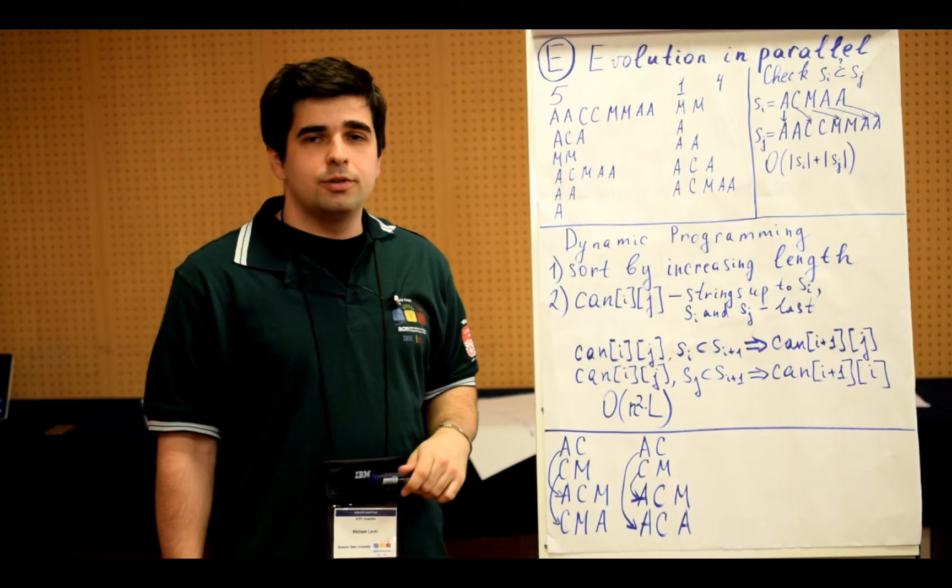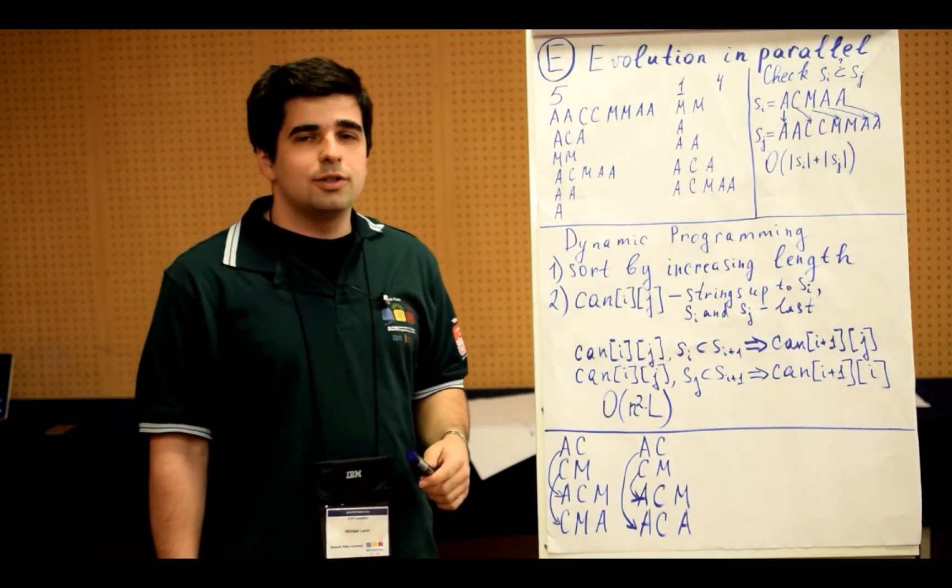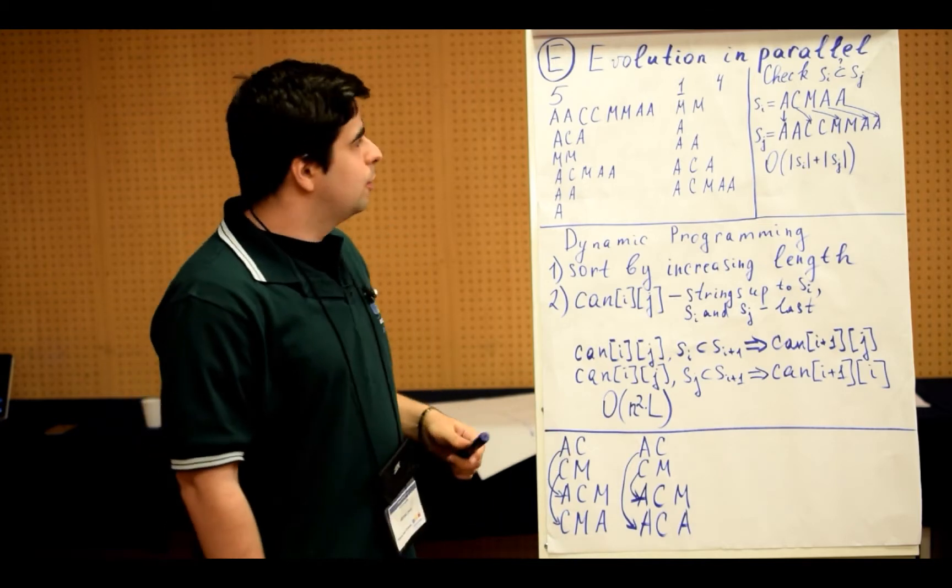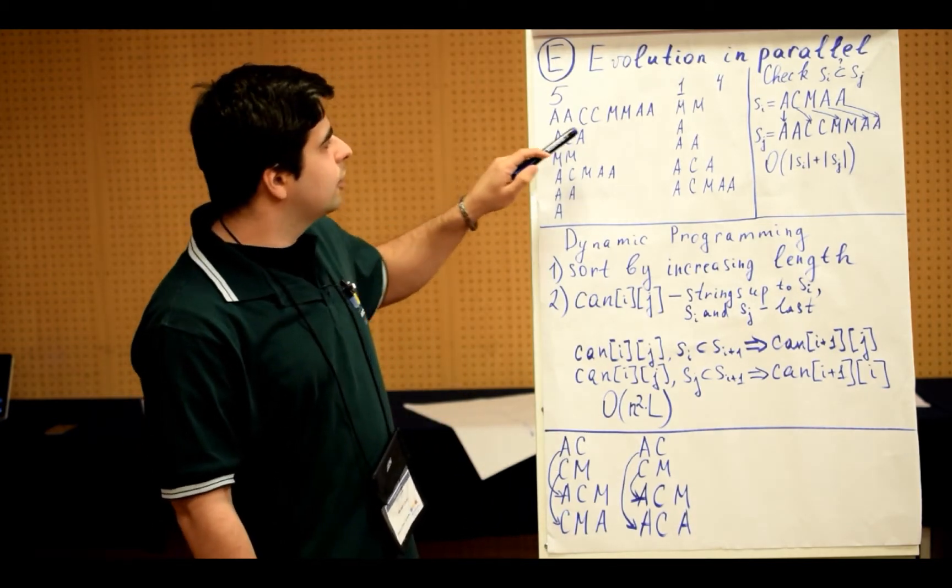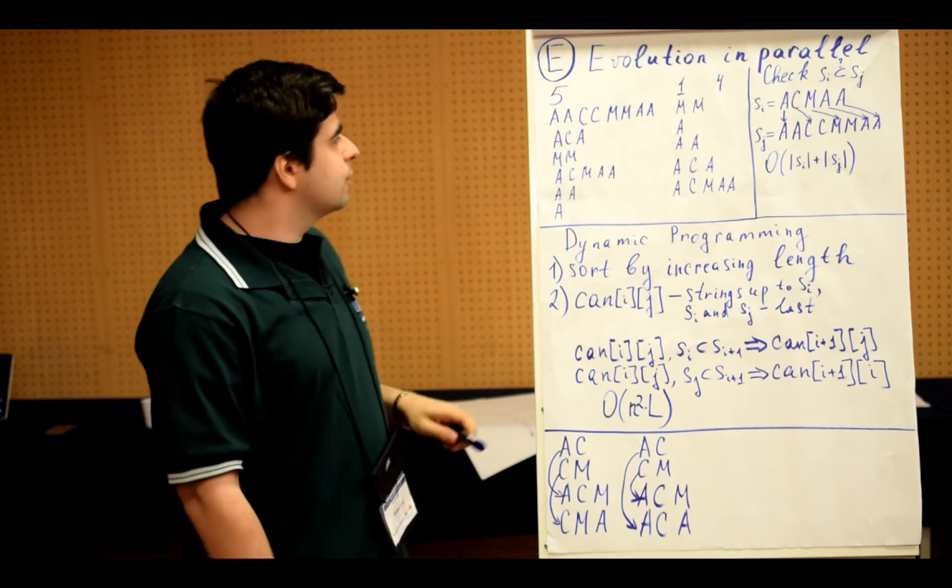This is a problem about the distant future. Our scientists have found on a very distant planet a very strange species which has a genetic code consisting of three letters: A, C, and M. There is only one kind of species on the planet, and we are given its full genetic code.